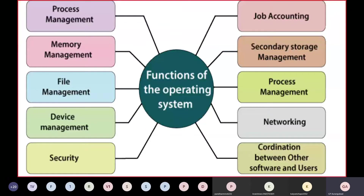The functions of operating systems: the first is process management. Every application is divided into different processes — you can see this in Task Manager — and these are managed by the OS. Second is memory management: every application needs memory allocation, and when terminated, memory must be freed. Third is file management: locating files, managing the file system.